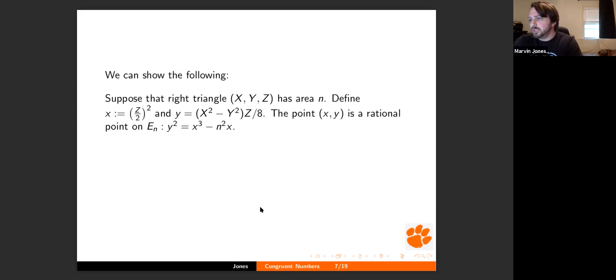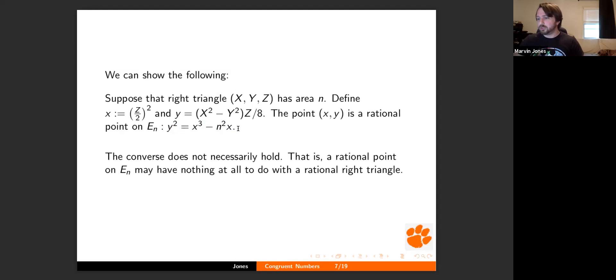So let's talk about the elliptic curve we care about at the moment before I give you more properties. So if I have a right triangle, so going back to the congruent number question, with X, Y, and Z as my sides, Z is the hypotenuse again, and it has area N, I can define lowercase x and y in this way. And it will turn out that these two points are going to be points on this elliptic curve.